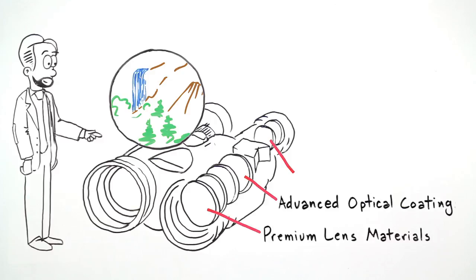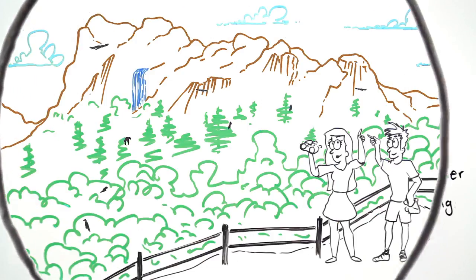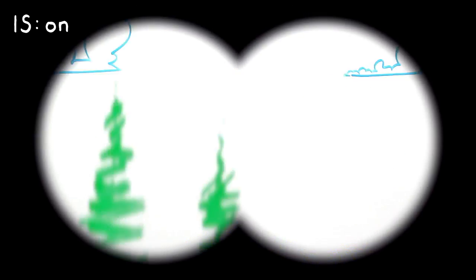In addition, Canon's doublet field flattener lens elements minimize blurred edges. Just soak in that pristine, wide field of view.